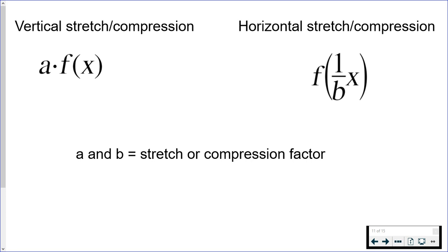This video is about vertical and horizontal stretches and compressions. A vertical stretch or compression looks like someone is stretching your graph from the top and the bottom — vertical is up and down. A horizontal stretch or compression looks like someone is stretching your graph from the left and the right, or compressing it from the left and the right.